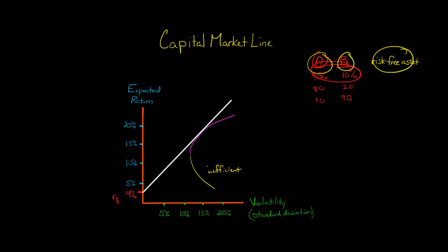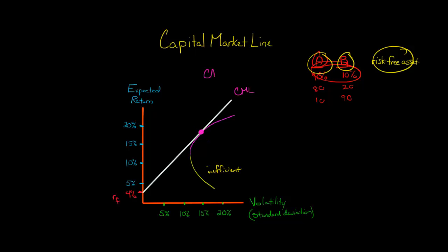This purple part is called the efficient frontier. The point where this line touches the efficient frontier is called the tangent portfolio. This white line is called the capital market line. It represents all the different combinations of stock A, stock B, and the risk-free asset — that's why it's different from the curve, which is just stock A and stock B. If all the assumptions of the capital asset pricing model (CAPM) hold, then this tangent portfolio is the market portfolio.